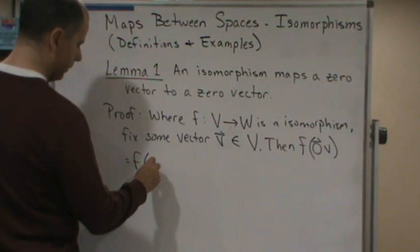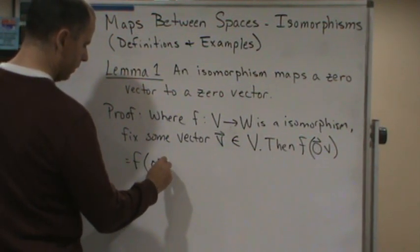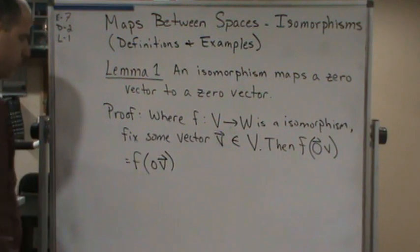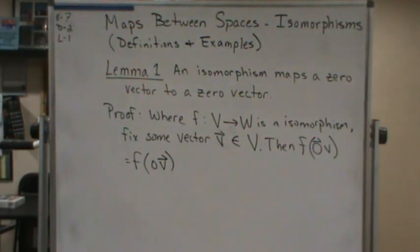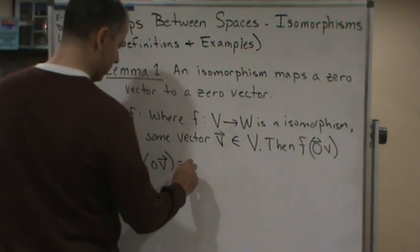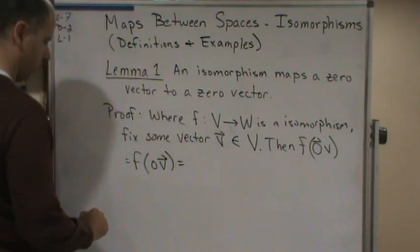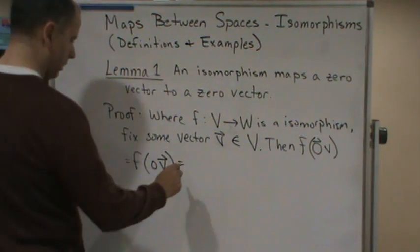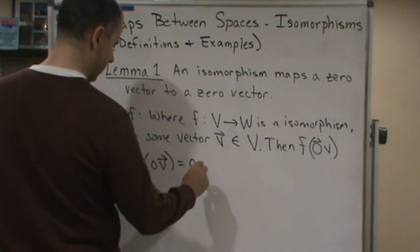F of zero times the vector V, which is then equal to zero of